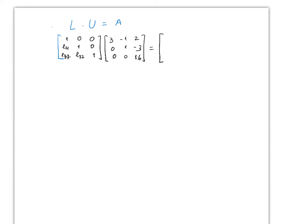Now L will be [1, 0, 0; l21, 1, 0; l31, l32, 1], and U is the matrix we just found: [3, -1, 2; 0, 1, -3; 0, 0, 16]. We need L times U to equal the original matrix A = [3, -1, 2; 6, -1, 1; -3, 5, 2]. Remember the key point: when we multiply L times U, the result must equal A.